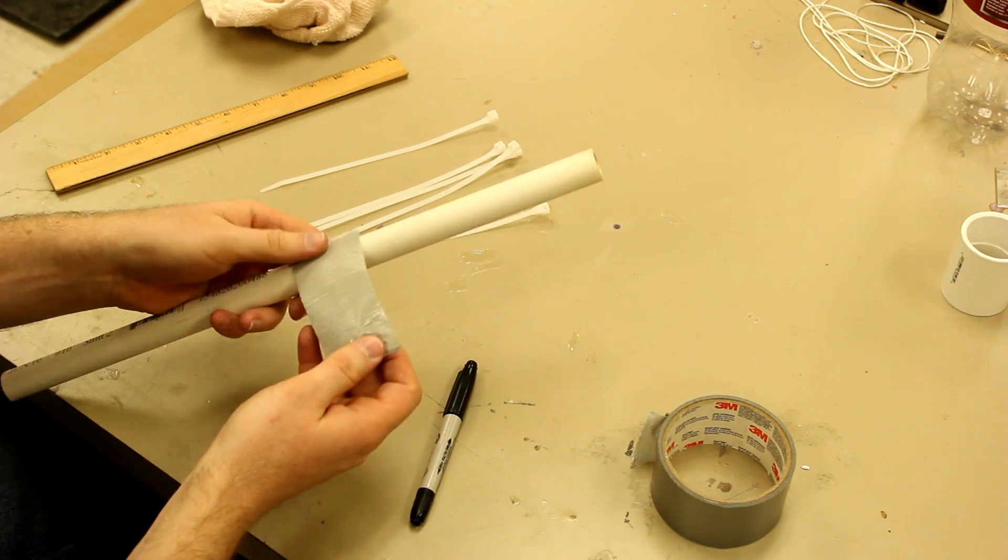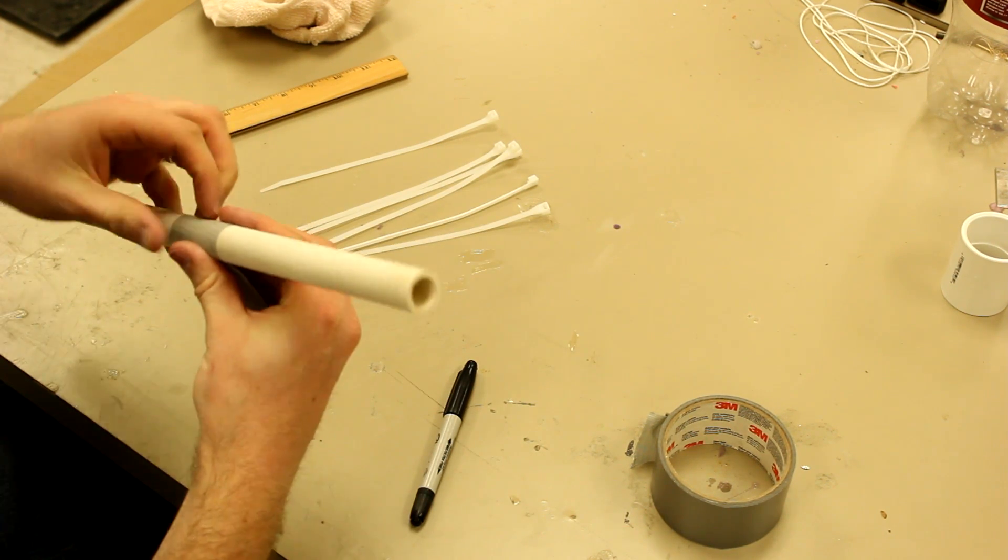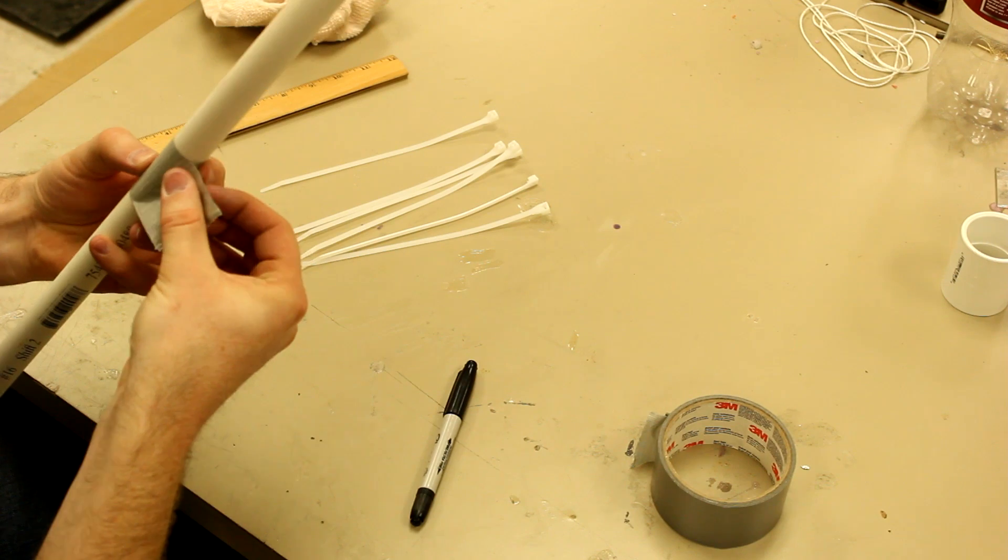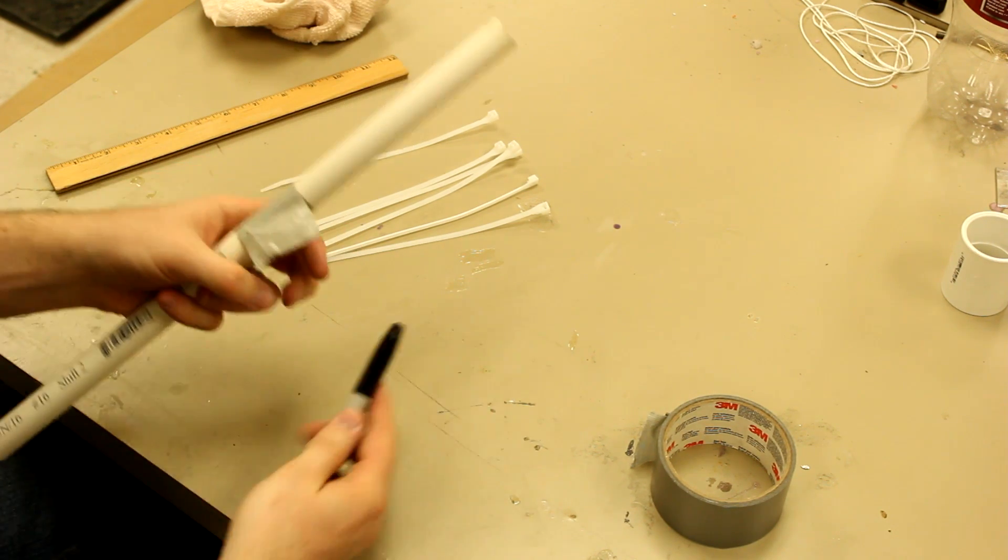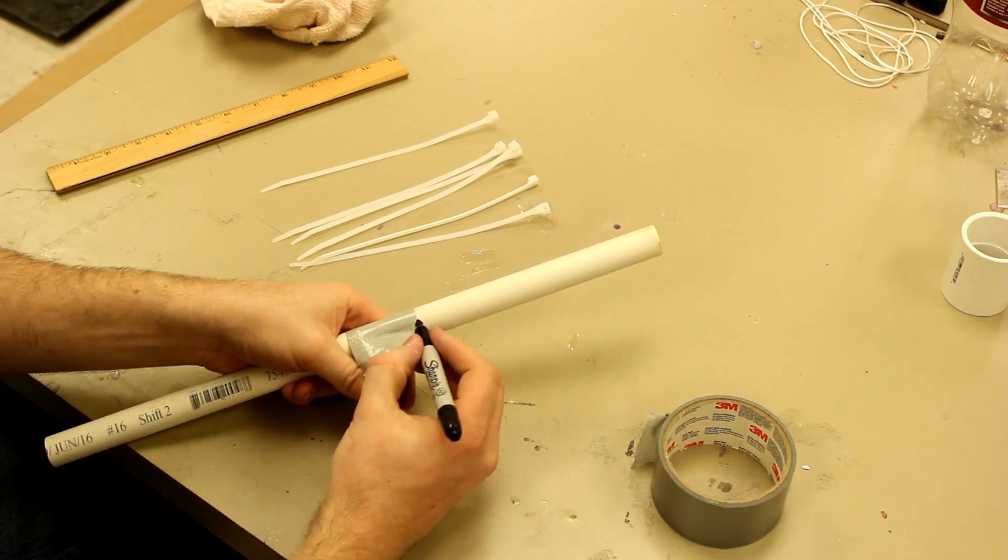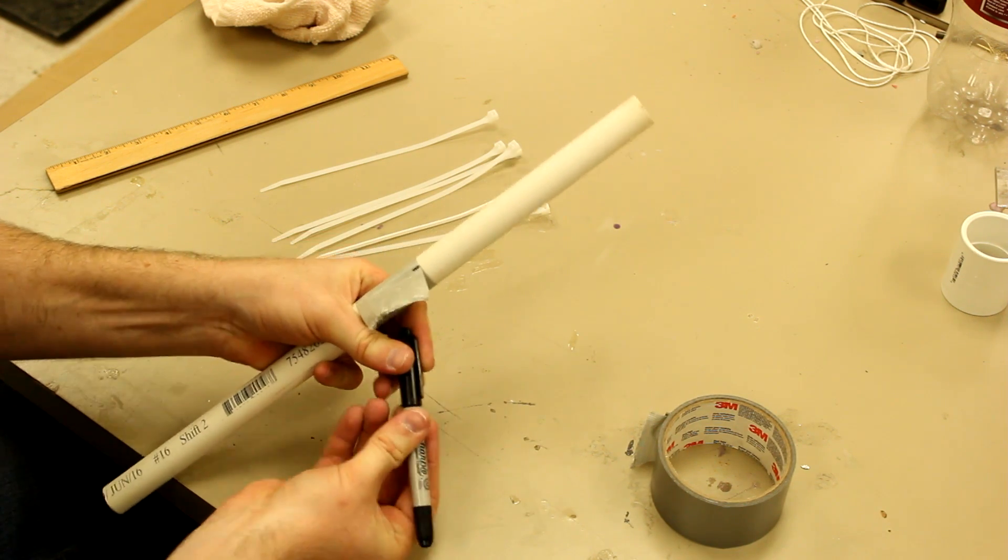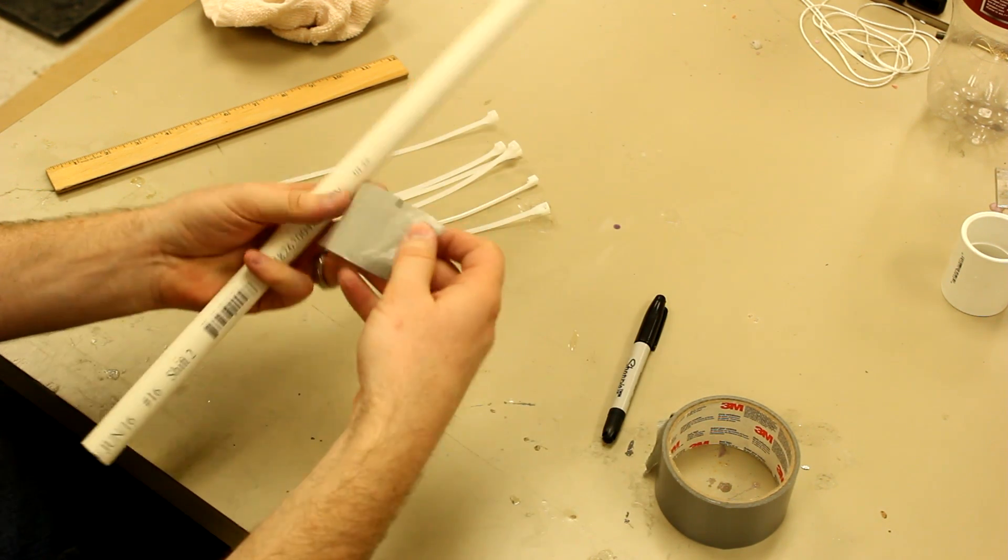So what we're going to do first is take a piece long enough that it will fit around the tube at least once. We're just going to wrap that all the way around and lay it back on itself. And then we're just going to mark with our permanent marker where that end meets the rest of the tape. And then we'll pull that off.